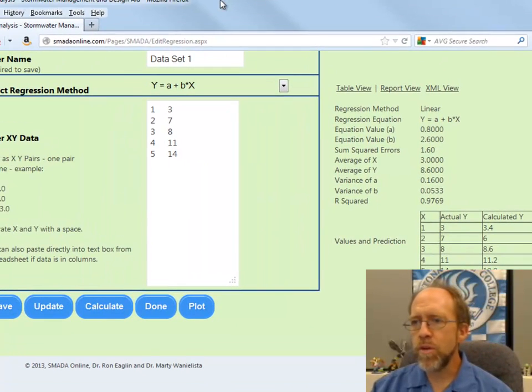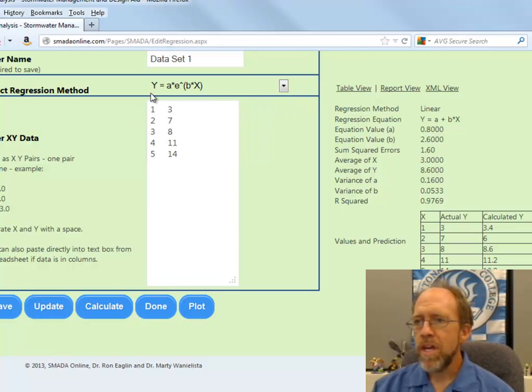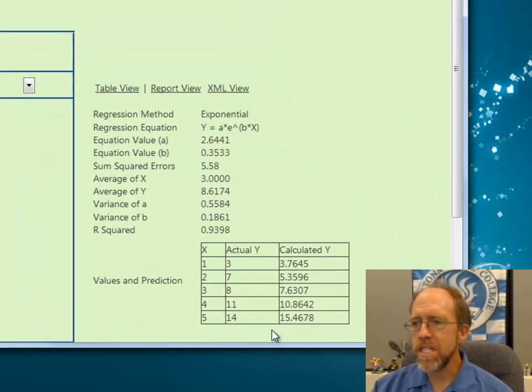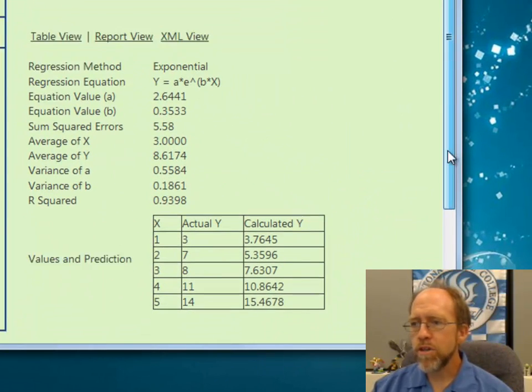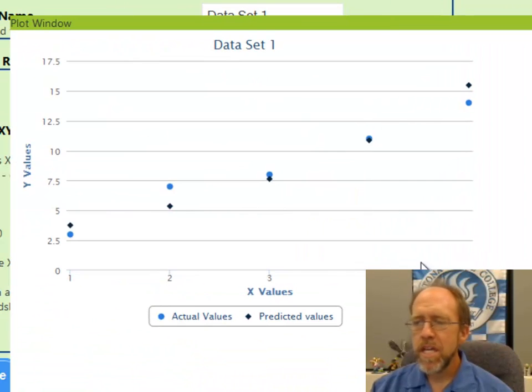One of the things I could do with this is I can change the regression equation. So let's say we have a regression equation that uses, in this case, an exponential equation, and click Calculate. It's going to recalculate. You're going to see different values here. If I were to turn around and plot, the plot's going to look a little bit different in this case, not tremendously different because they both fit pretty well.